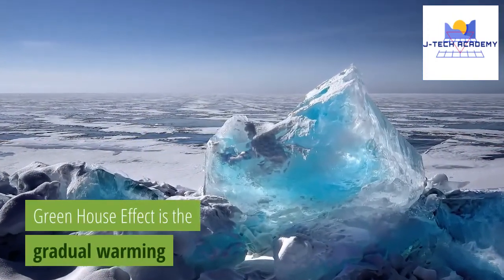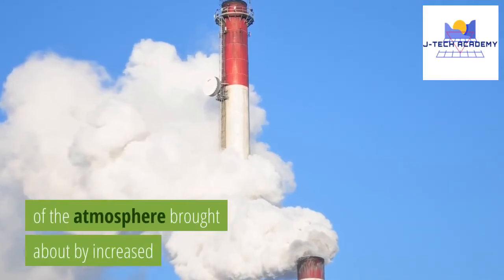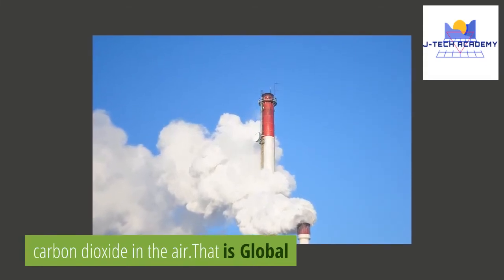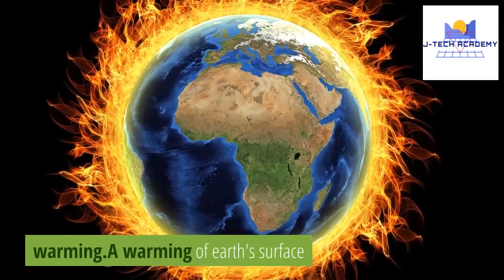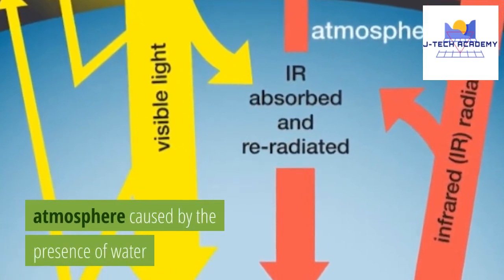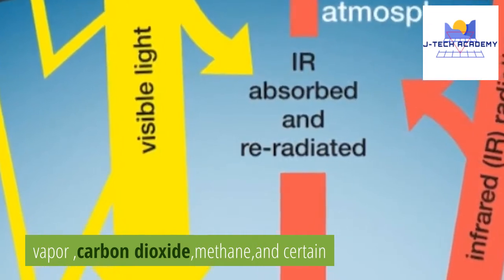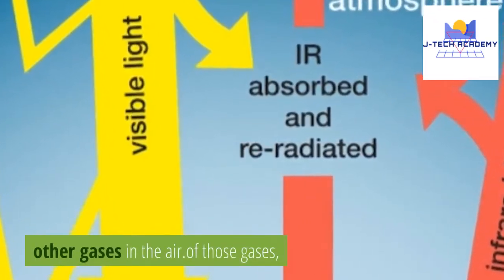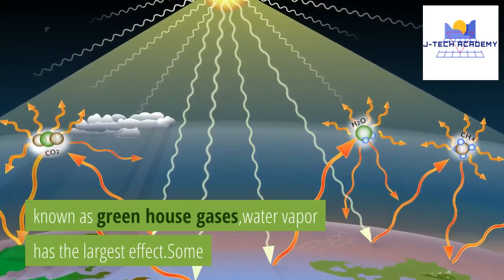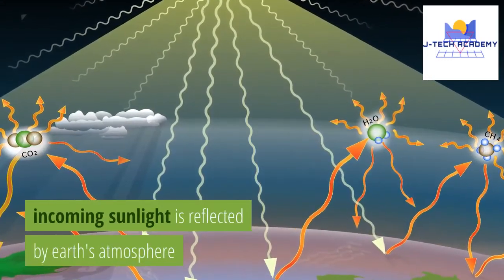The greenhouse effect is the gradual warming of the atmosphere brought about by increased carbon dioxide in the air — that is global warming. It is a warming of Earth's surface and troposphere, the lowest layer of the atmosphere, caused by the presence of water vapor, carbon dioxide, methane, and certain other gases in the air. Of those gases, known as greenhouse gases, water vapor has the largest effect.